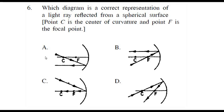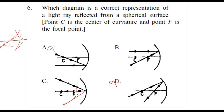Which of the following diagrams is correct? Any ray passing through the center of curvature C goes back in the same direction. The first option is incorrect because the ray passing through C should go backward. The second is also wrong because the ray through C must go backward but it is shown passing through focus. A ray falling on the pole should reflect at the same angle, but one option shows it incorrectly. The correct answer is the one where a ray passing through focus becomes parallel after reflection.